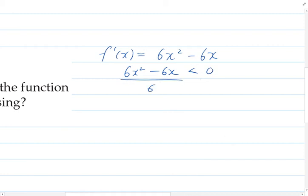So I'll start by dividing both sides by 6. And so I get x² - x is less than zero. And you can see here we've got a quadratic. So I've got x times (x - 1) is less than zero. So we need to think about where this function is less than zero.